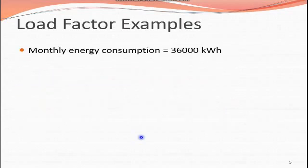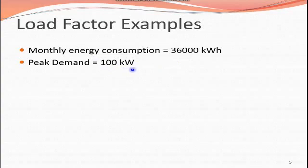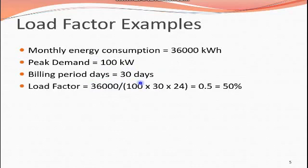Here is an example about load factor. Monthly average consumption is 36,000 kilowatt-hours, peak demand is 100 kilowatts, and the billing period is 30 days. Load factor equals average demand divided by maximum demand. The average demand is 36,000 divided by (30 days × 24 hours), and peak demand is 100, giving a load factor of 0.5.